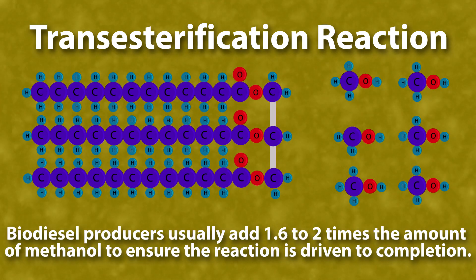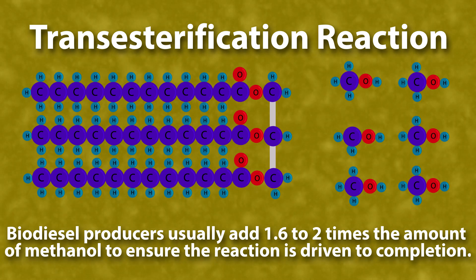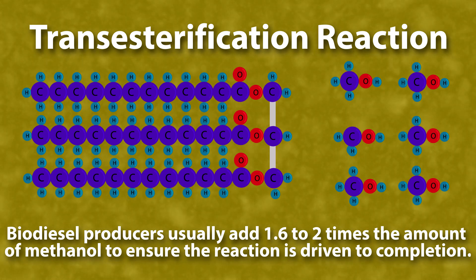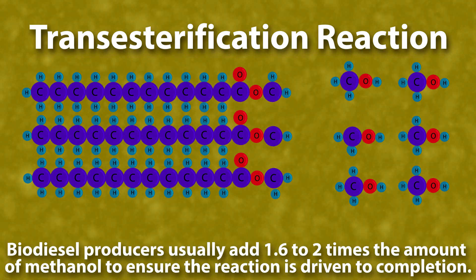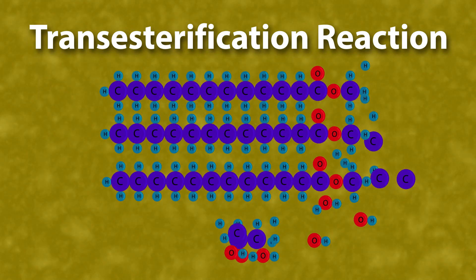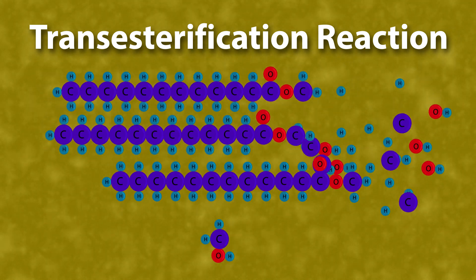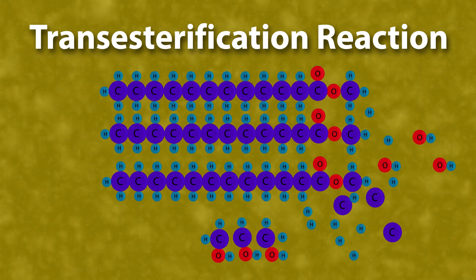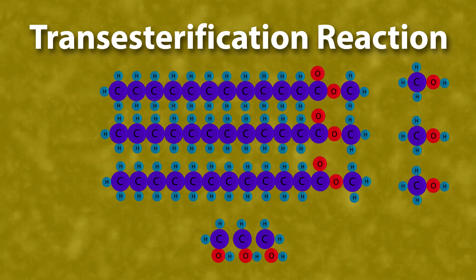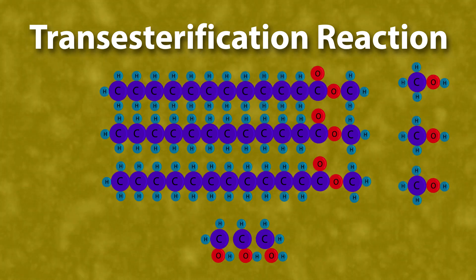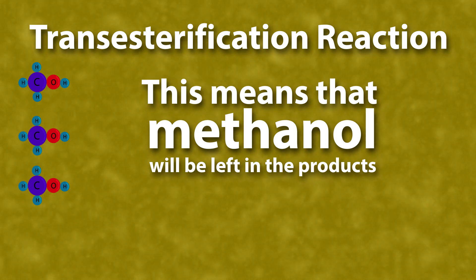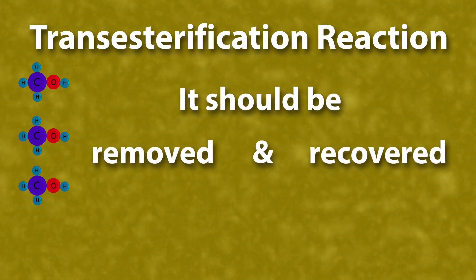Biodiesel producers usually add about twice the methanol amount to get a complete reaction, as shown here. This means methanol will be left in the products and should be removed and recovered.